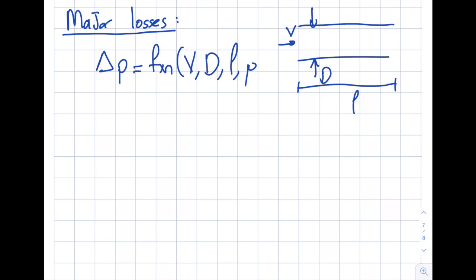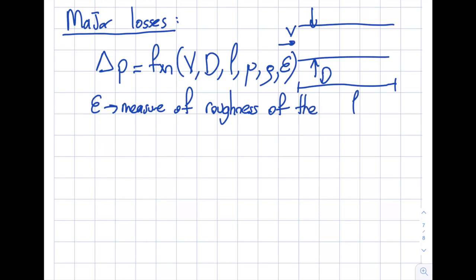For turbulent flow, two more parameters come into play compared to laminar: density ρ, and epsilon ε — the measure of roughness of the pipe wall. For example, a copper pipe has an associated surface roughness, while a PVC pipe is assumed to be fully smooth, meaning ε equals zero. The unit of epsilon is length.